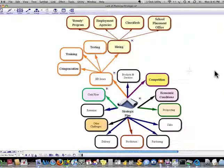Let's continue working on this Mind Map and look at another one of the issues. We could look at competition, prospecting, sales. Let's look at cash flow.